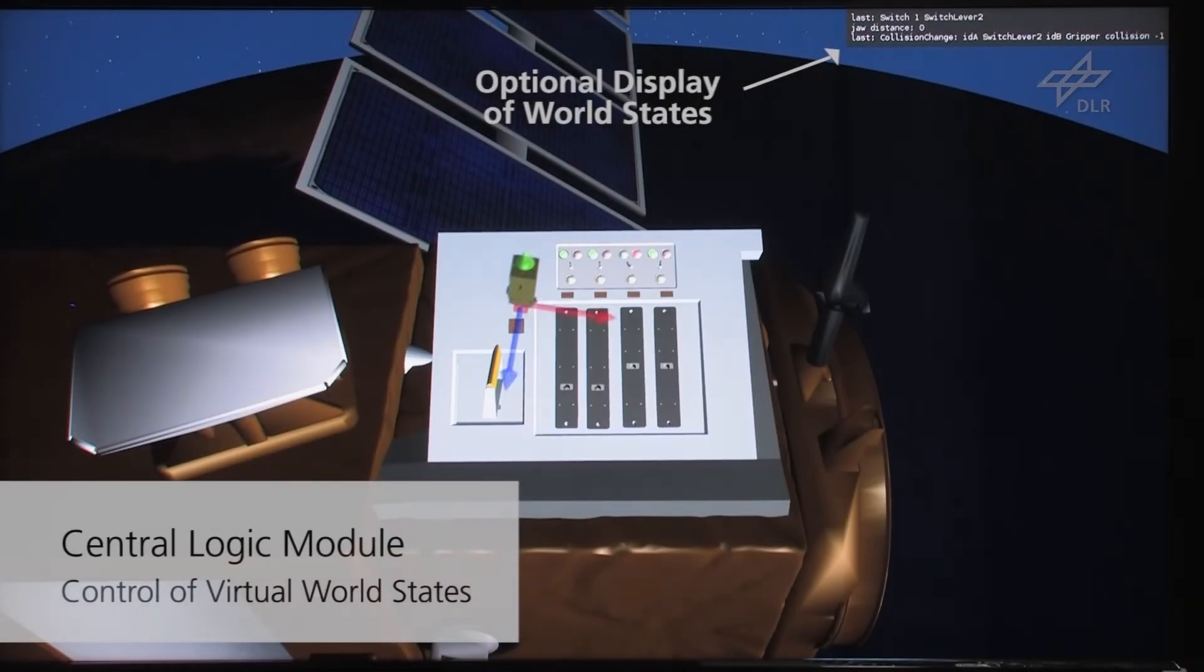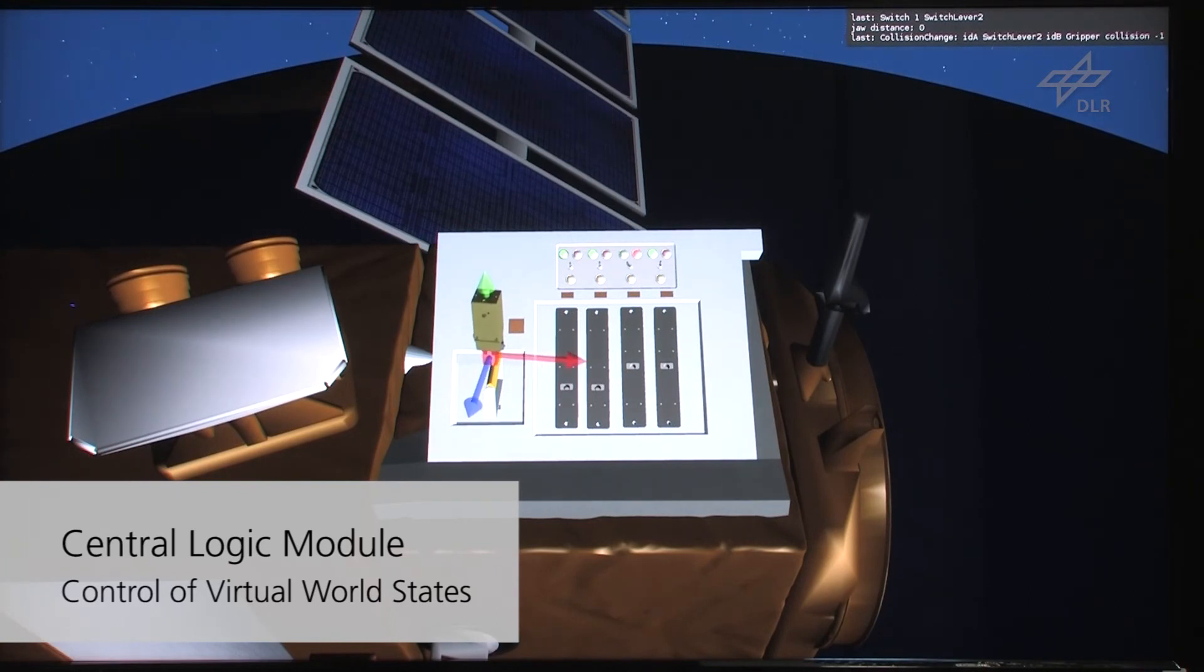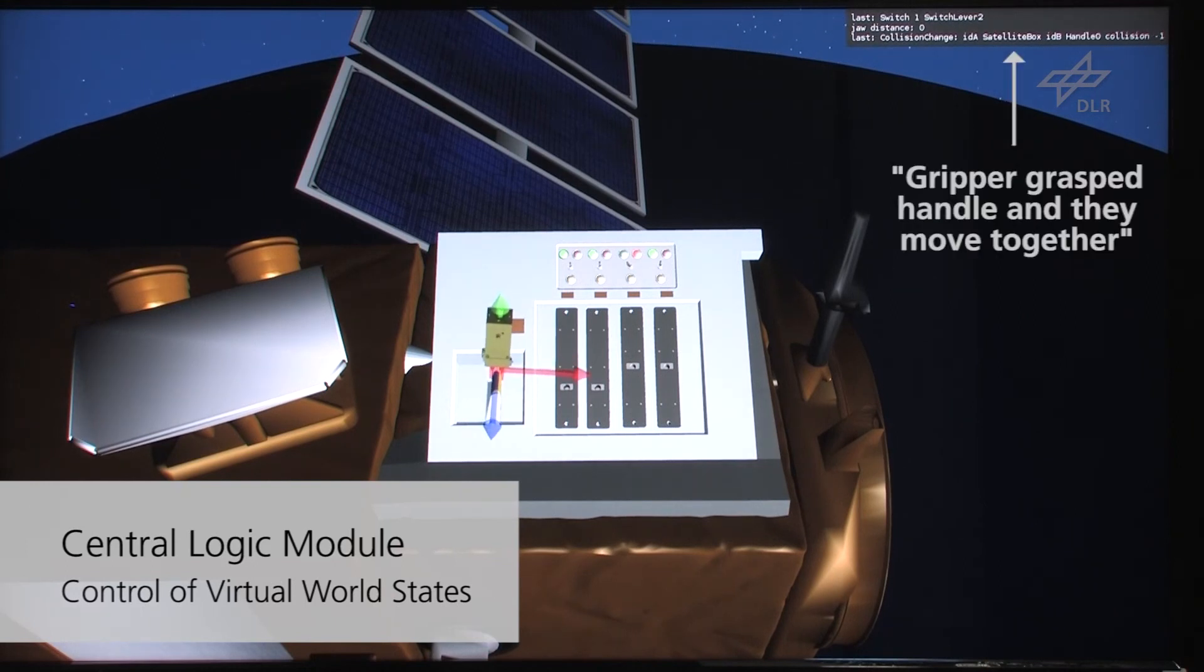We implemented a logic module which monitors the states of and between all the objects in the scene. In this example, the logic detected that the handle was grasped by the gripper. Several decisions can be made depending on the complexity of the simulation.